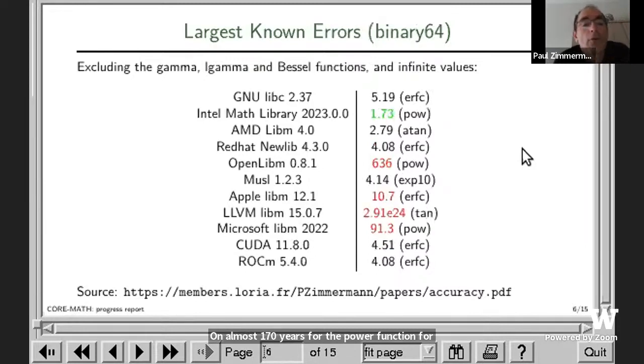For double precision, this is even worse. The best library is also the Intel Math Library with a maximum largest known error of 1.7 ULPs for the power function, and you see very large errors for the OpenLibm, the Apple library, and the Microsoft library. The LLVM value is an artifact and I guess this will be fixed soon. The goal of CORE-MATH is that you get 0.5 values everywhere in this table, which should be the ideal situation, and the different libraries would compete only on the speed of their implementation and not on the accuracy.